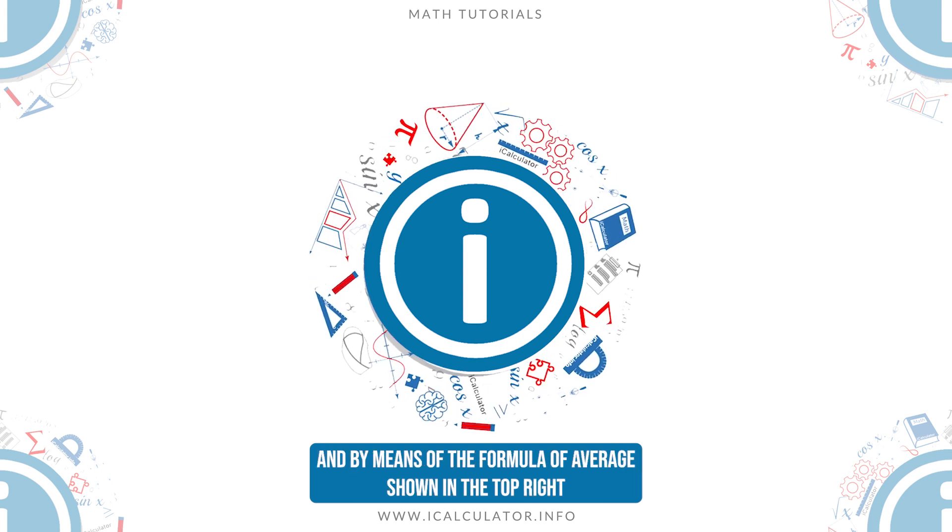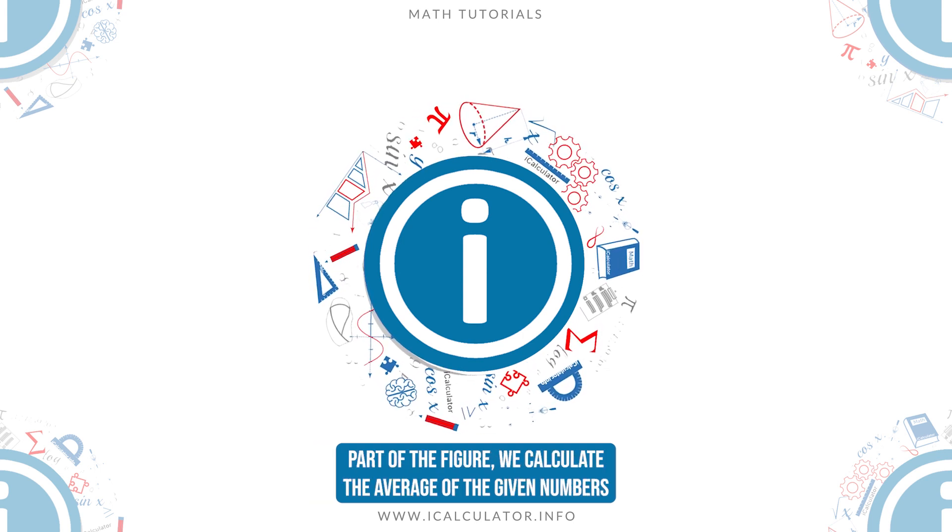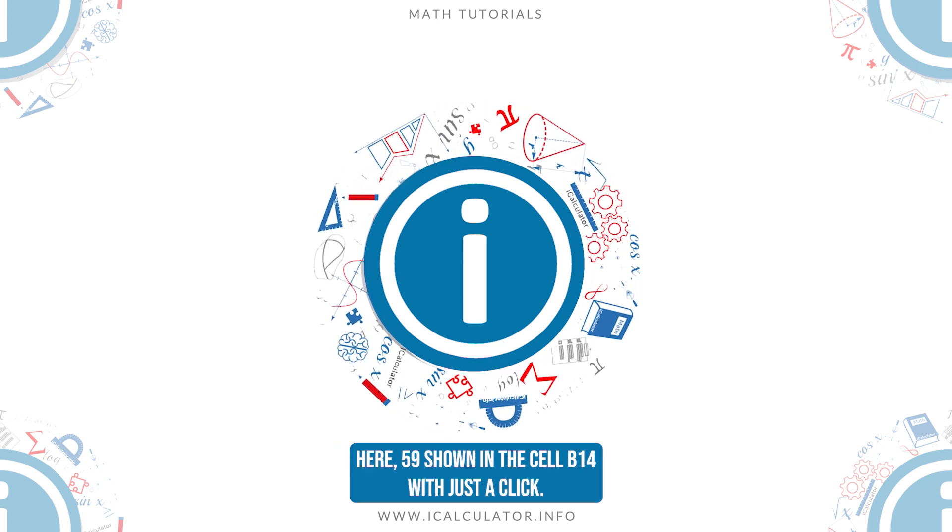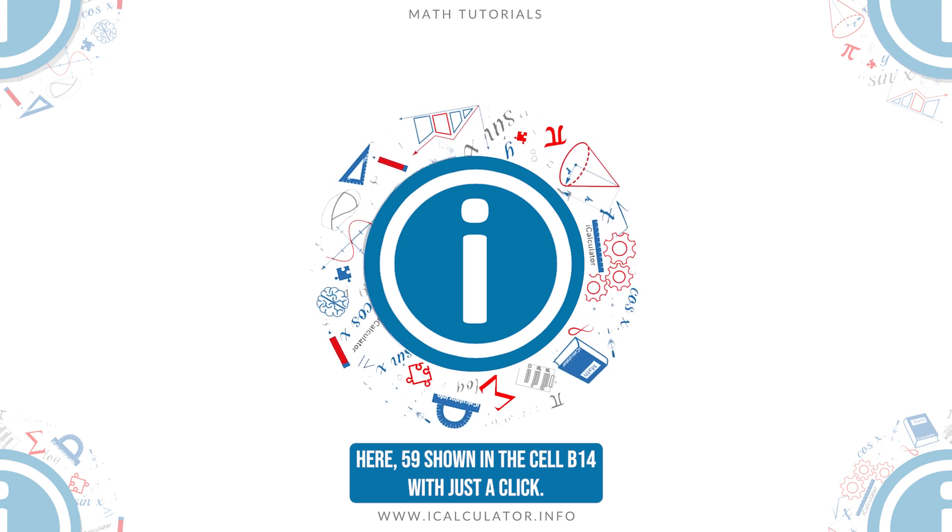And by means of the formula of average shown in the top right part of the figure, we calculate the average of the given numbers, here 59, shown in the cell B14, with just a click.